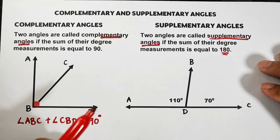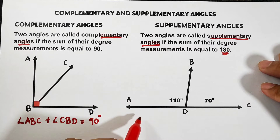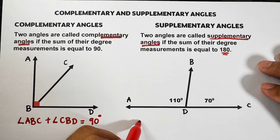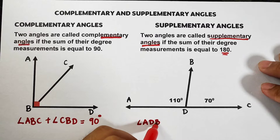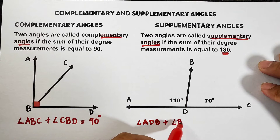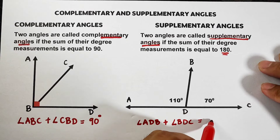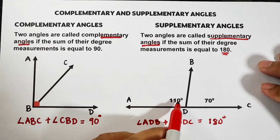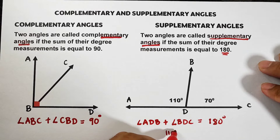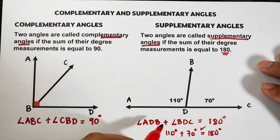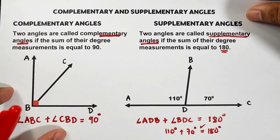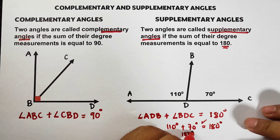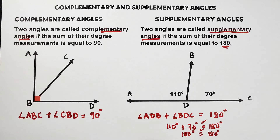This is a straight angle, meaning it is 180 degrees. To prove that these two angles are equal to 180, let's try: angle ADB plus angle BDC is equal to 180 degrees, which is a straight angle. Let's add the measurements: 110 degrees plus 70 degrees is equal to 180 degrees. Yes, they are equal — 180 degrees equals 180 degrees. That is the concept of complementary and supplementary angles.